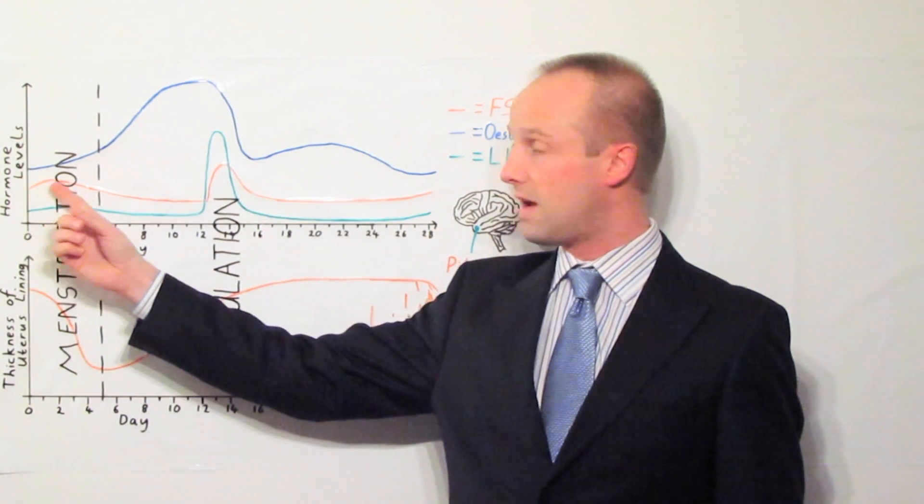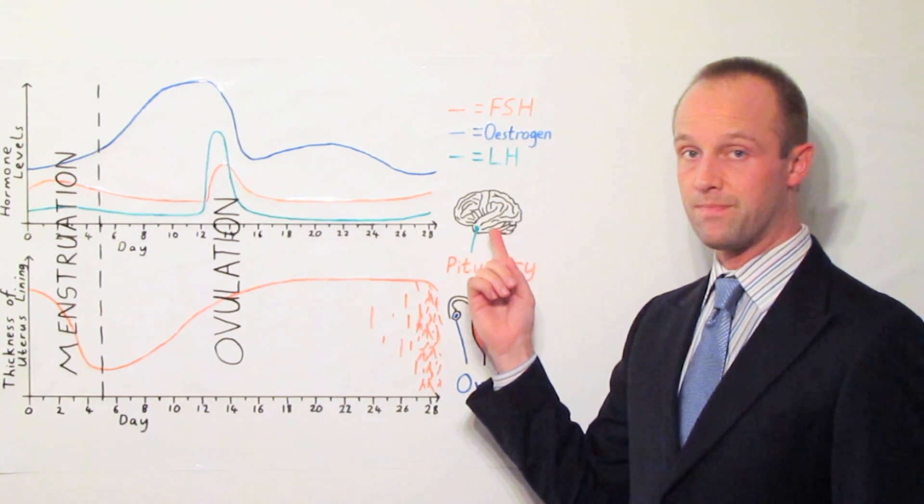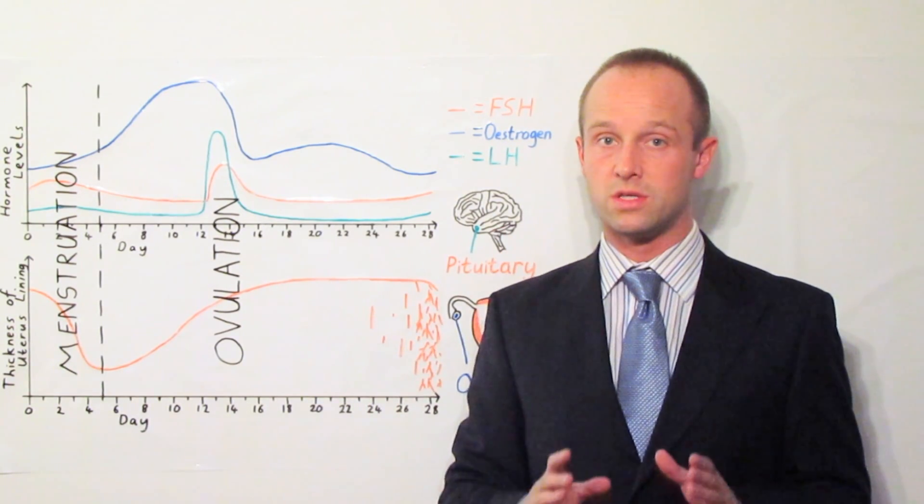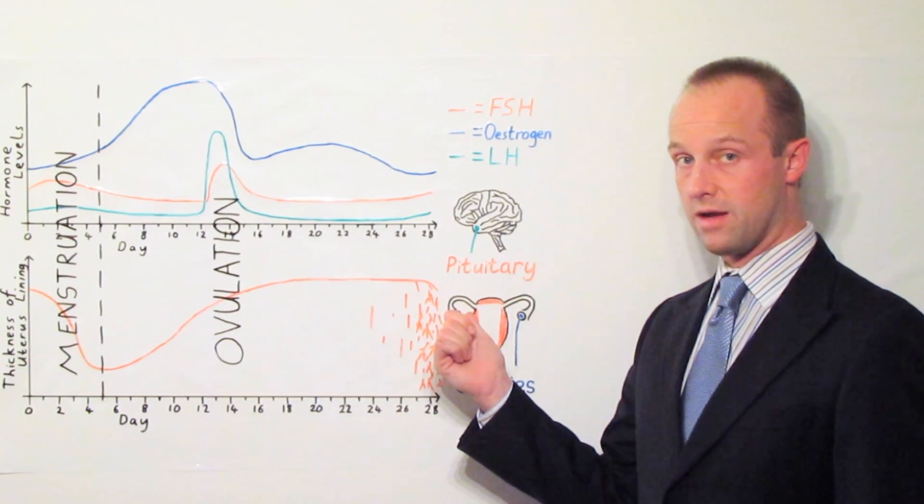Around about that time, the level of FSH starts to increase, remember that's produced in the pituitary. And that's what causes a new egg to start maturing in the ovary here.